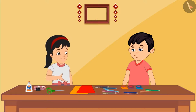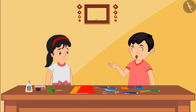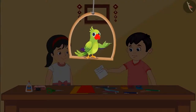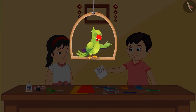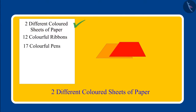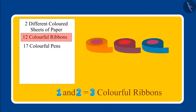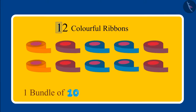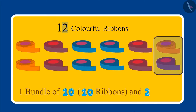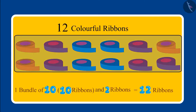But Pinky, this was what was written in the list. No, Chotu, show me the list. Children, out of Pinky and Chotu, who do you think is correct? First, two sheets of paper — which you brought correctly. But one and two below that means twelve colorful ribbons, not three. Here, one means one bundle of ten, that is ten ribbons, and two means two more ribbons. So in total it becomes twelve ribbons. Understood?